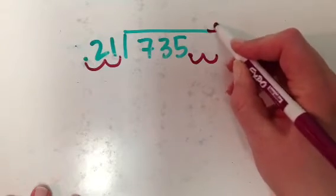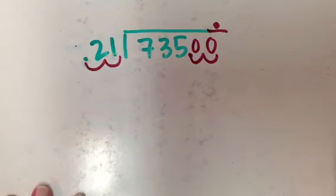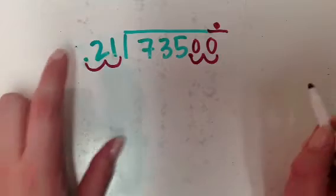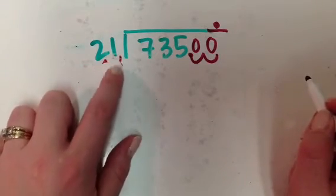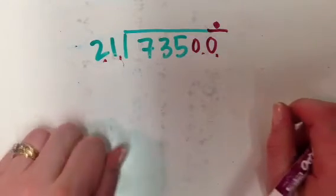So that means I have to go 1, 2 from there, and so then when I bring my decimal point straight up it'll end up right there, and I have to fill in my two empty little divots right there with some zeros, okay? So now it's like my problem becomes 21 into 73,500, right?